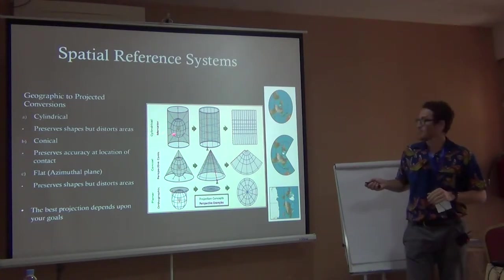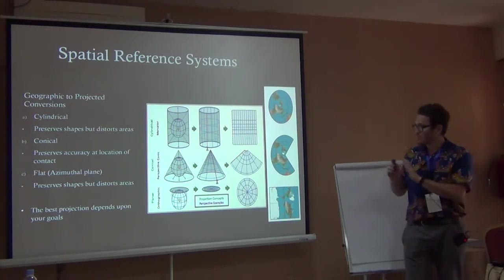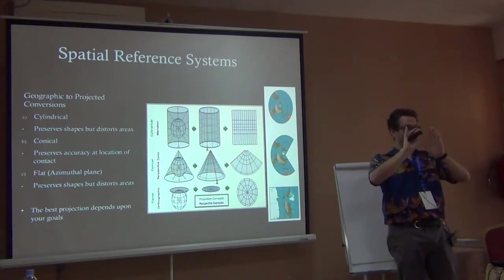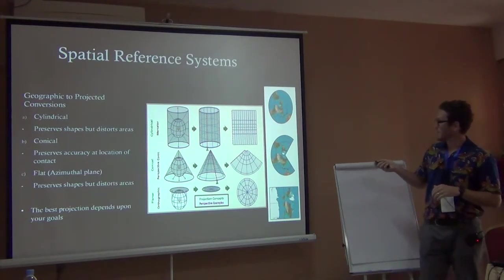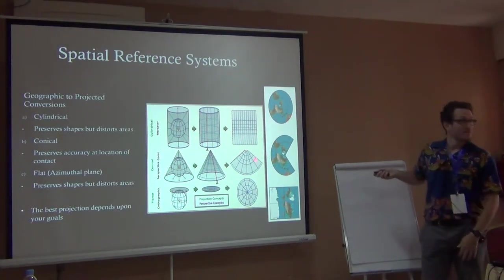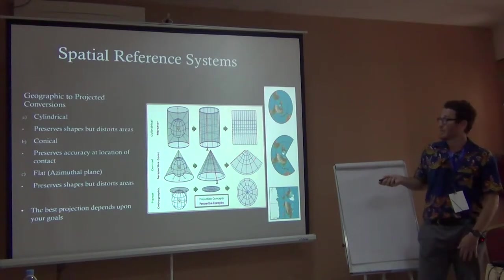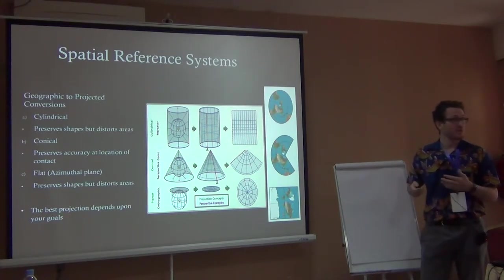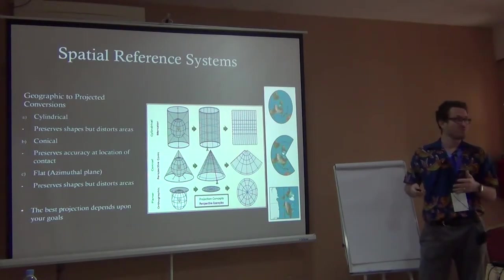The way to envision these projections is to picture the Earth at the center and then unroll the surface. You get three types: cylindrical, conical, and azimuthal (or planar). Each one can be used for different purposes depending on the question you have, and each distorts the actual geometry in a different way.